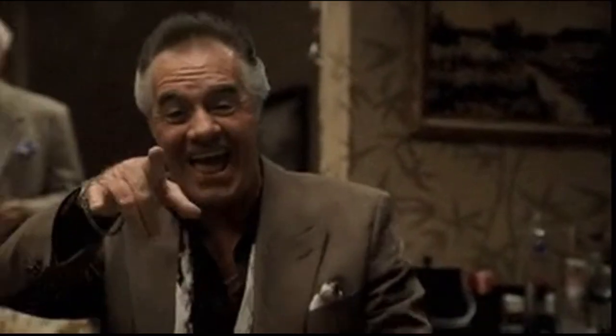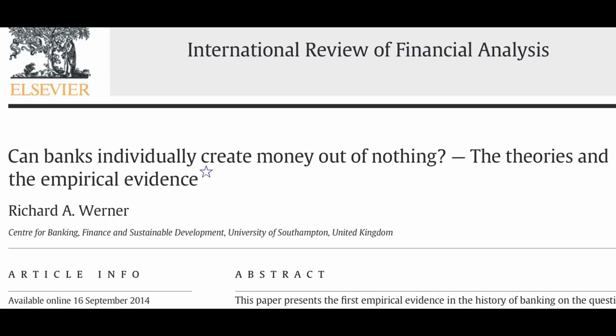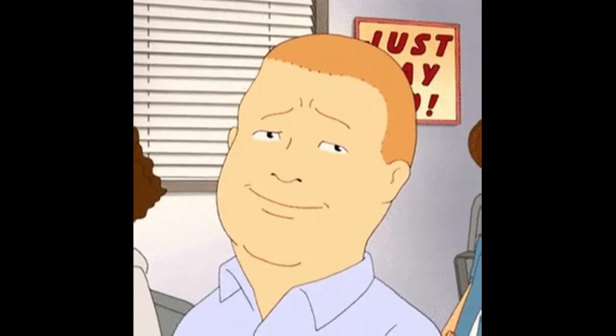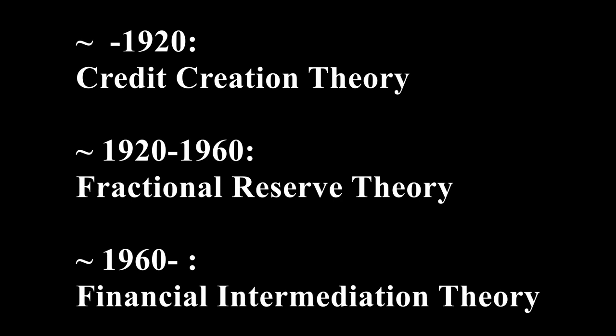The Credit Creation Theory differs from the Fractional Reserve Theory in that one individual bank is able to create deposits. You would expect many empirical tests to have been conducted to see which theory is correct — but from the mid-19th century until 2014, there were no scientific empirical tests on this issue. The first empirical test was published in 2014 by Richard Werner, and only the Credit Creation Theory was consistent with the observed accounting records.